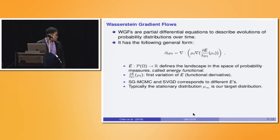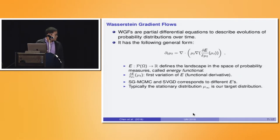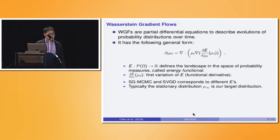Our conclusion is that SGMCMC and SVGD correspond to different energy functionals, but their stationary distributions are the same — both equal the posterior distribution P(theta|D). As a result, computing the posterior now reduces to solving this PDE.